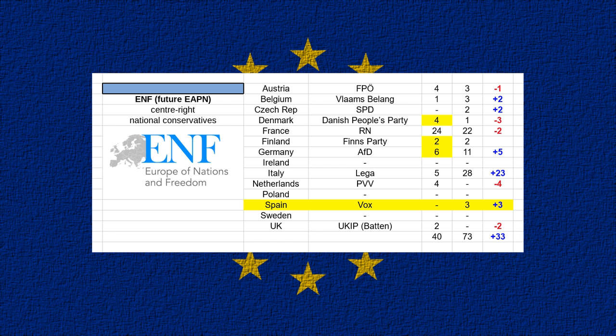In the Netherlands, PVV — Geert Wilders' party — lost all four of their seats. This party faces an uncertain future with the rise of FVD — Thierry Baudet's party — which pursues a similar national conservative line but appears to have the momentum and may be winning over some of PVV's base. There may not be a long-term future for both parties in Dutch politics, and the FVD seems the better long-term bet.